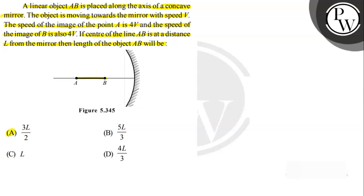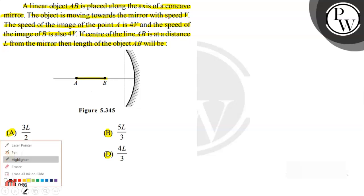Option A is 3L by 2, option B is 5L by 3, option C is L, and option D is 4L by 3.